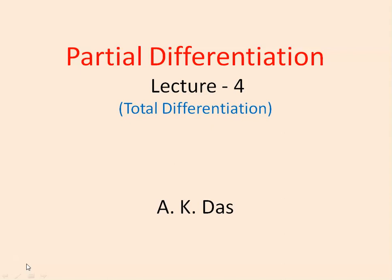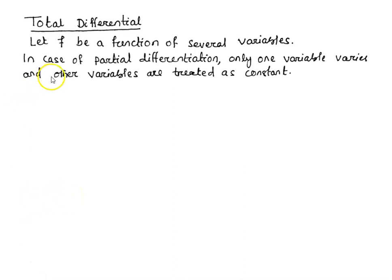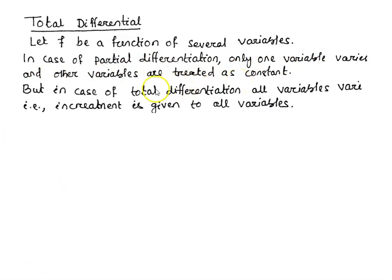In the case of partial differentiation of a function of two variables, one of the variables is treated as a constant whereas the other variable varies. But in case of total differentiation both variables vary. Let f be a function of several variables. In case of partial differentiation only one variable varies and other variables are treated as constant, but in case of total differentiation all variables vary — that is, increment is given to all variables.